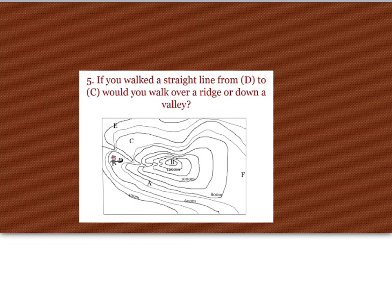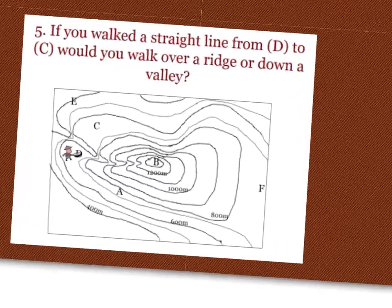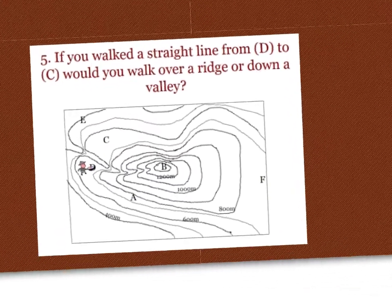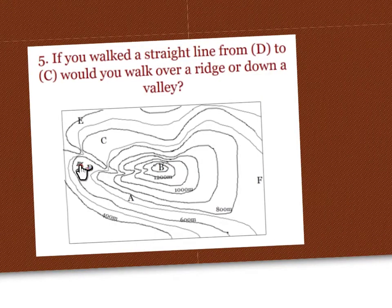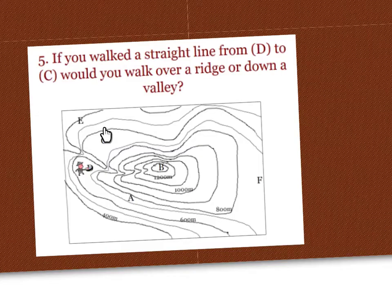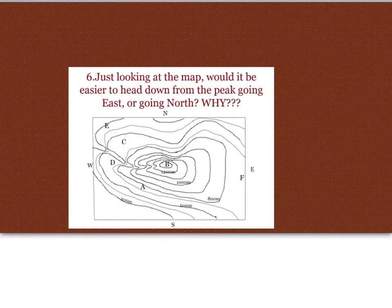If you walked a straight line from D to C, see this gentleman here standing at D, straight line from D to C, would you walk over a ridge or down a valley? Now, last question. Just by looking at the map, would it be easier to head down from the peak going east or north? Tell me which direction and then explain why.